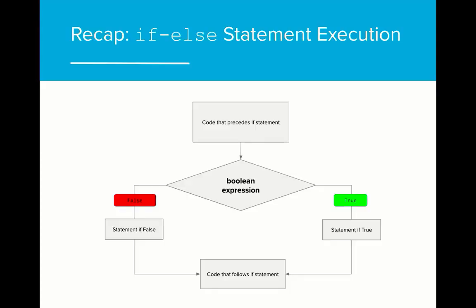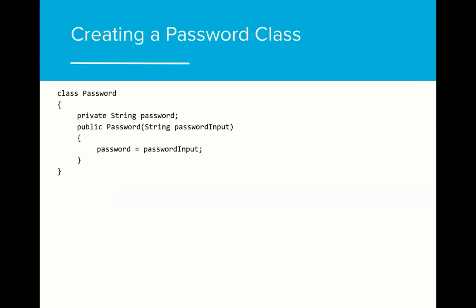In previous lessons, we learned about how to use if-else statements to create alternate paths that execute different commands depending on the outcome of the Boolean expression. Using what we've learned about if-else statements, let's implement a password class. Imagine we were building a program where users had to create and input a password in order to create an account on our site. We might start by creating a password class that takes a password string as its input and sets the value of the private string password to the value input by the user. Here is an example of what that might look like.